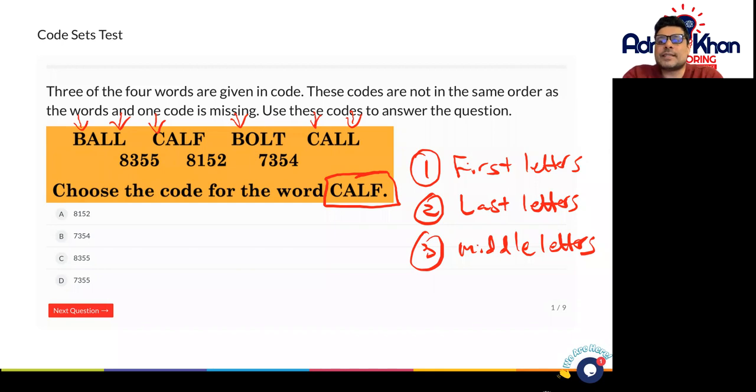Now we've done the first letters so we can't figure this out. We've tried the last letters we can't figure that out either. Now let's go to the middle letters and try and see if we can find anything in common here.